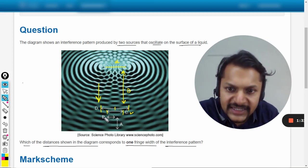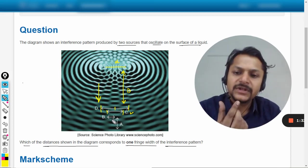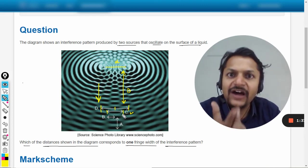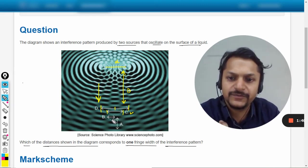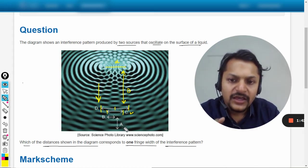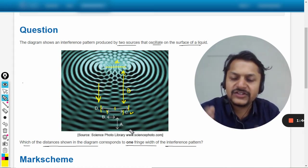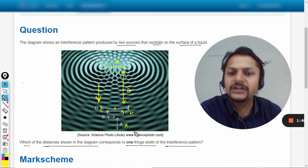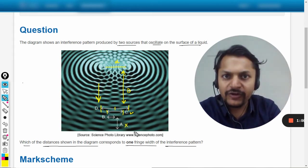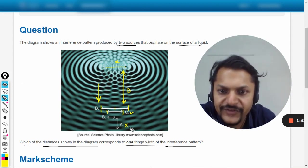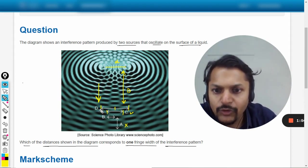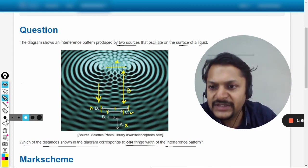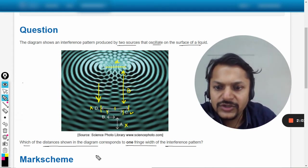This is the fringe spacing. But B is half of it - half of the fringe spacing. A is nothing, just the wave moving further. We have not learned anything about A in the topic of interference. And D is also nothing. So C is the fringe spacing in this question.